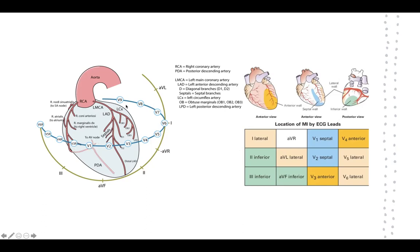There are extension leads going past V6 — V7, V8, V9 — and we can also assess the right-hand side. The limb leads include AVR, AVL, and inferior leads like AVF. Using a diagram, if ST elevation is noted in lead one, AVL, V5, and V6, those leads correspond to the lateral wall — indicating a lateral wall ischemia.